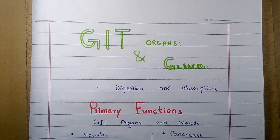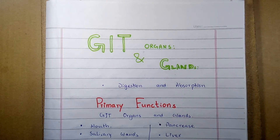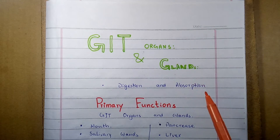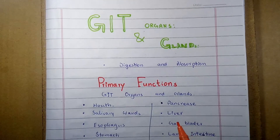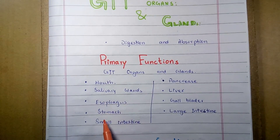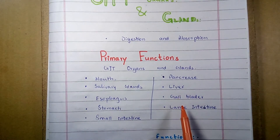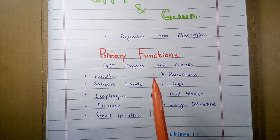The primary functions of the gastrointestinal tract organs and glands is the digestion and absorption of the food taken up by the human being. The organs and glands that take part in the gastrointestinal tract are: the mouth, salivary glands, esophagus, stomach, small intestine, pancreas, liver, gallbladder, and large intestine.